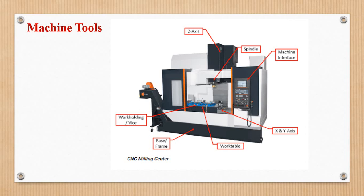If the spindle has a cutting tool for cutting, this is the work table, the base, the work holdings. The next is the machine interface.